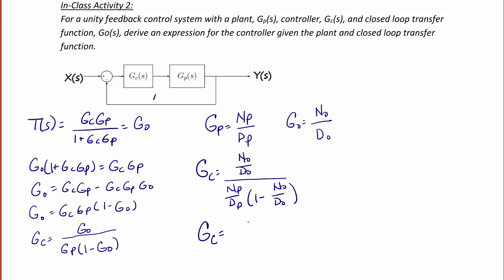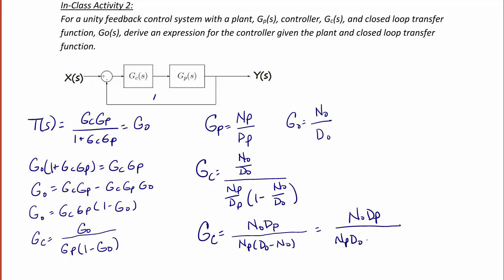we get that Gc is equal to N0·Dp over Np times (D0 minus N0). Or, multiplying out the denominator, we can write this as N0·Dp over (Np·D0 minus Np·N0).